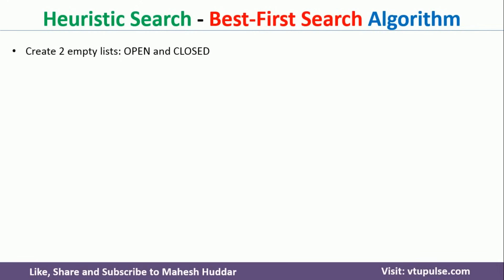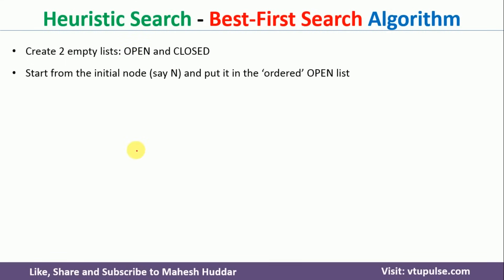In best first search algorithm, first we need to create two empty lists. We name those particular lists as open and closed. Next we will continue with the initial node — let us say that n is the initial node. We will put this initial node into the open list. This data structure is an ordered one, meaning all the nodes placed here will be arranged in ascending order.